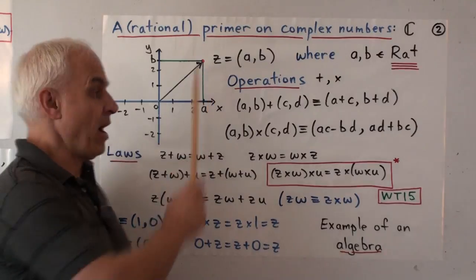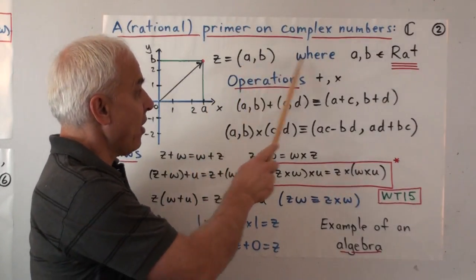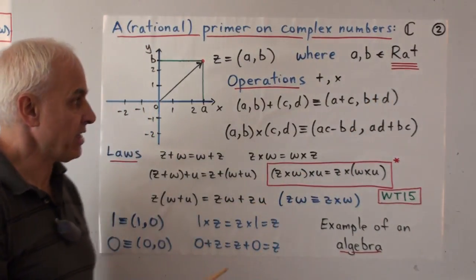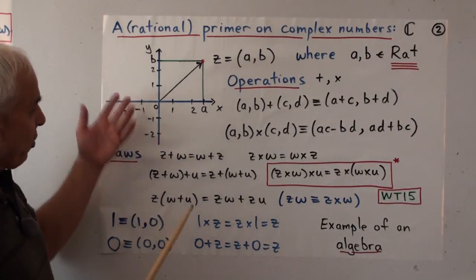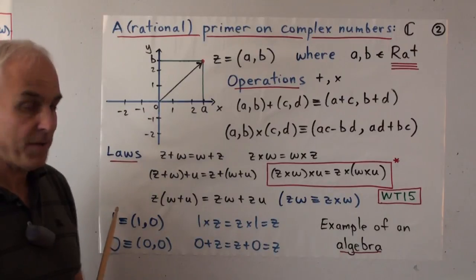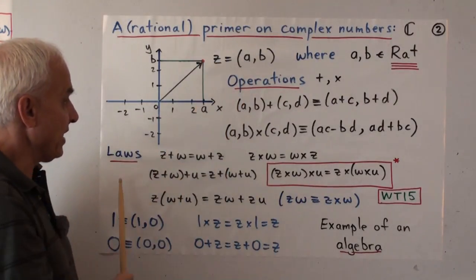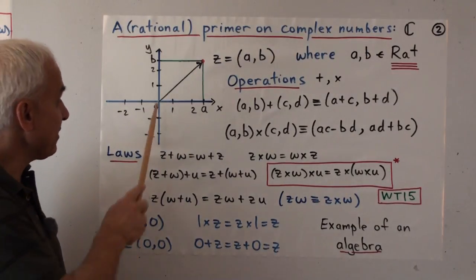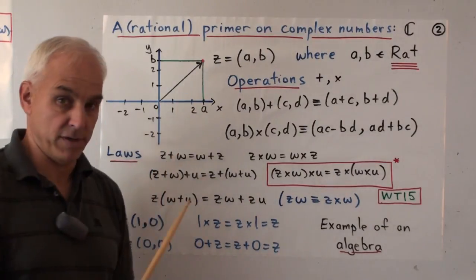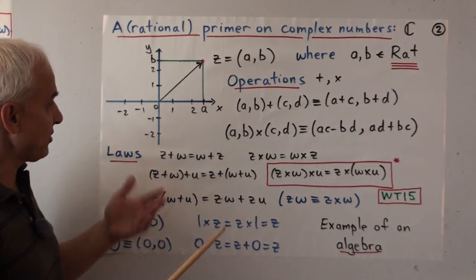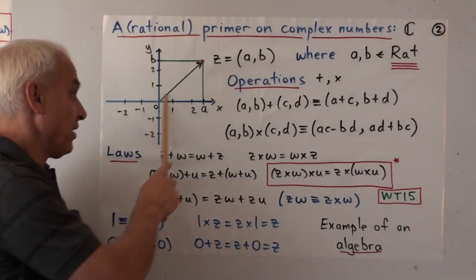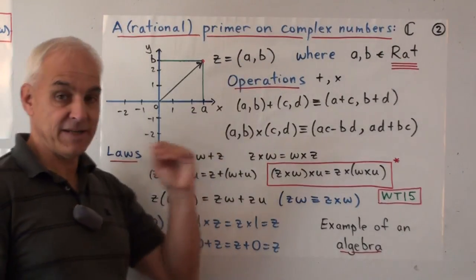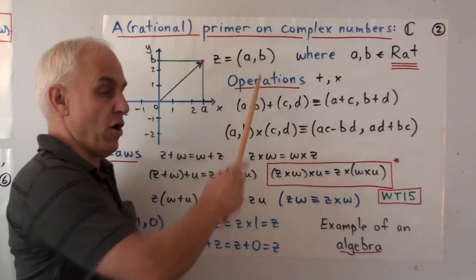So a complex number for us is a pair (a, b) of rational numbers. Pictorially, we have an xy-plane. The pair (a, b) can be thought of as the point with x-coordinate a and y-coordinate b, or as the vector from the origin to that point. Sometimes it's best to think in terms of a point, and sometimes in terms of a vector. But logically speaking, the complex number is neither of those — it's just the pair of rational numbers.